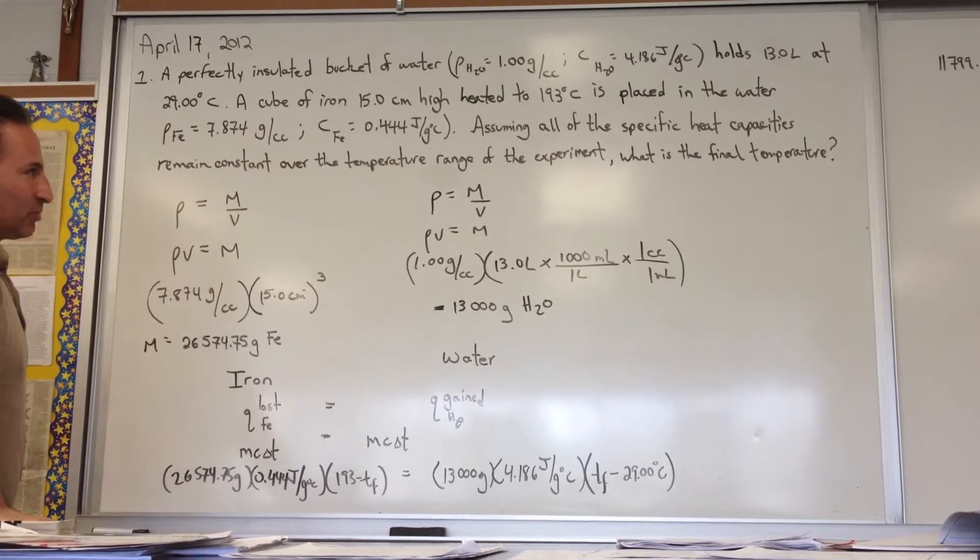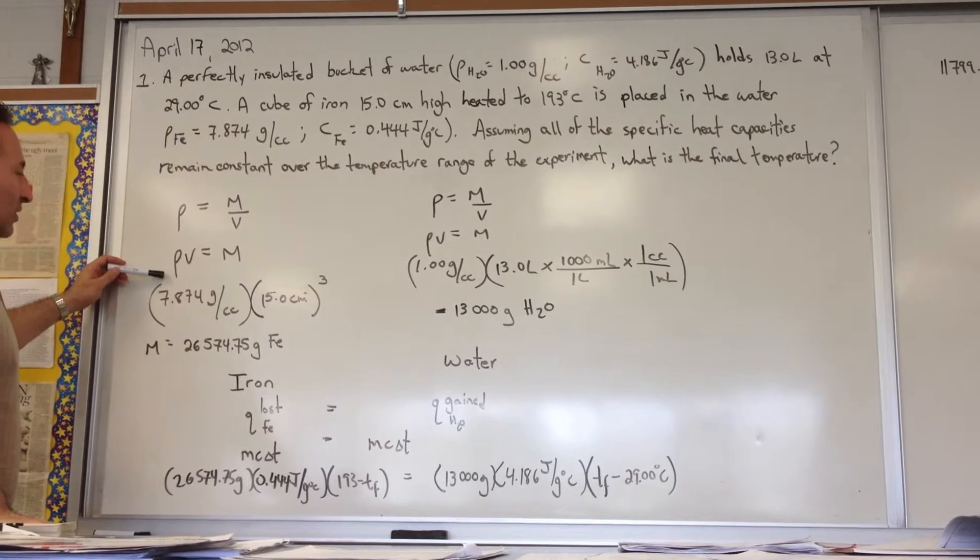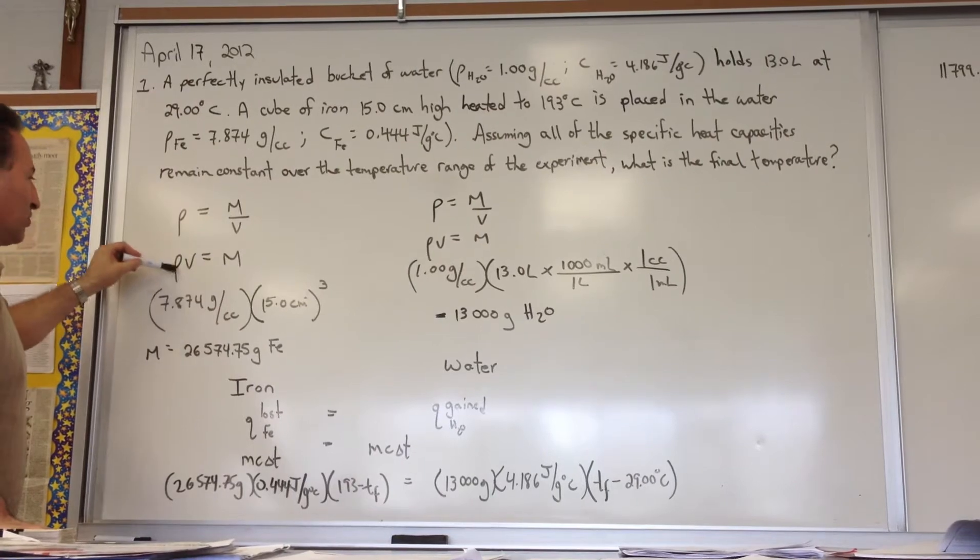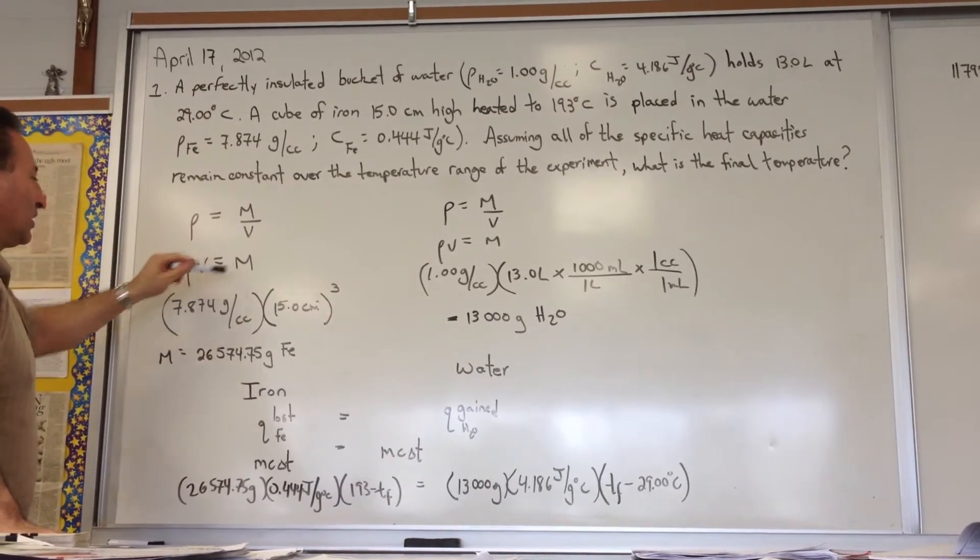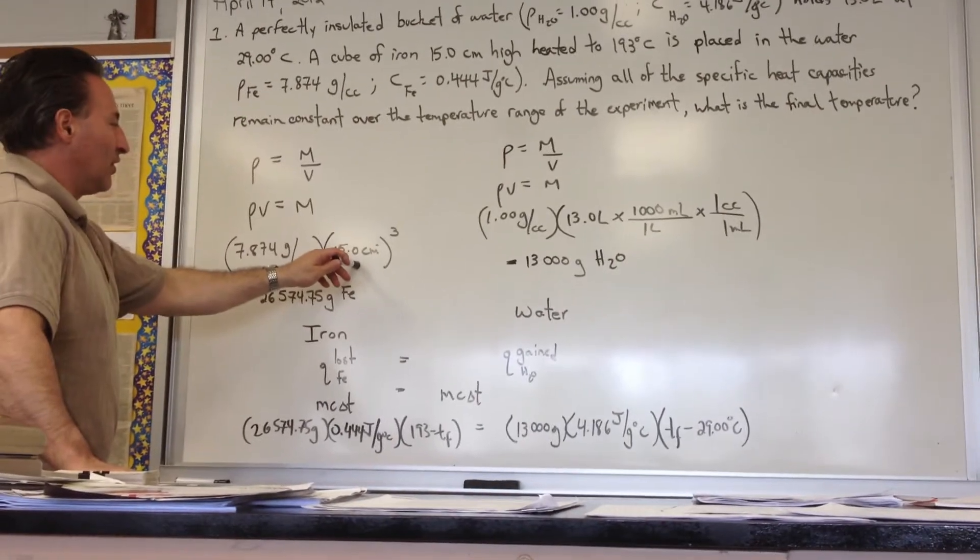The first step in solving this problem is to find out how much iron we have in grams. We're going to use the density equation: density equals mass over volume. We transpose volume to get the mass. Here's the density of iron.